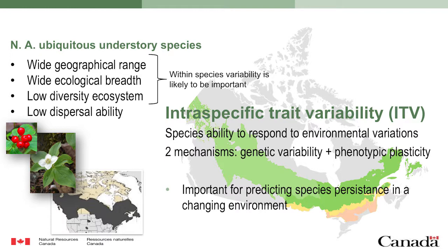All those species we see everywhere were not studied that much. In this workshop, we really thought this was a missing piece to predict the impact of global change on ecosystem processes. These species have a wide geographic range — some span more than 5,000 kilometers distance. They can be found in really poor boreal-type forests to maple-rich forests, growing in really low diversity ecosystems like the boreal forest.